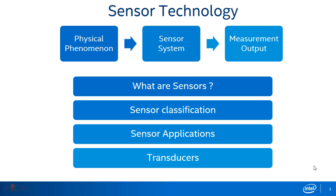Let us begin by understanding sensor technology. A sensor is a device that responds to any change in physical phenomena or environmental variables like heat, pressure, humidity, movement, etc. A sensor is basically the heart of a measurement system. It is the first element that comes in contact with environmental variables to generate an output.